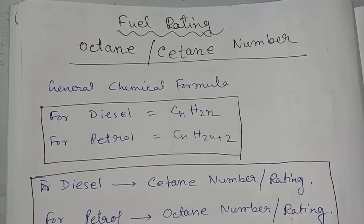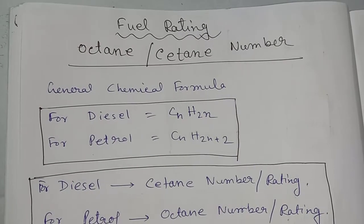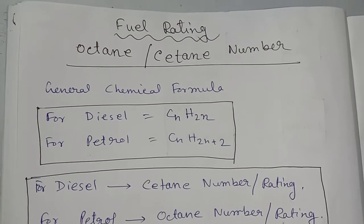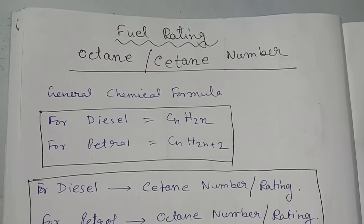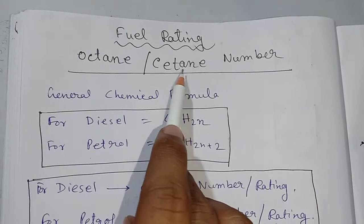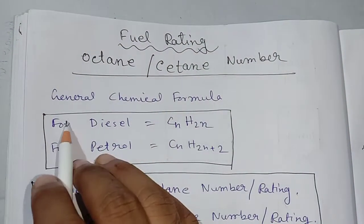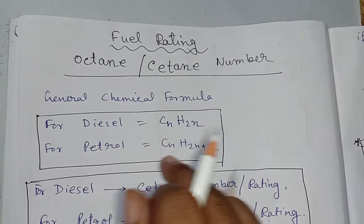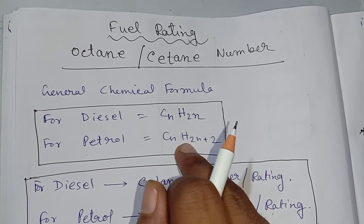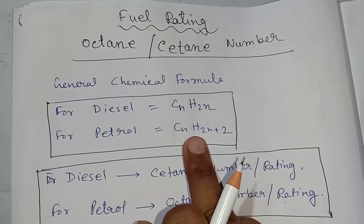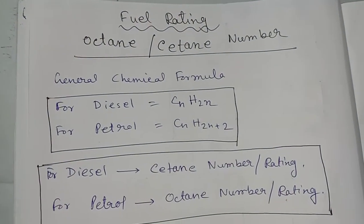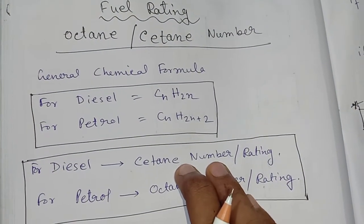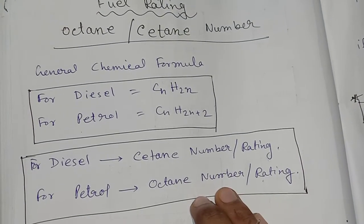Today's topic is fuel rating. Fuel rating depends upon two terms: one is octane number and the other is cetane number. Octane number is also called octane rating and cetane number is called cetane rating. The general chemical formula of diesel is CNH2N and petrol is CNH2N+2. Cetane rating is calculated for diesel and octane rating is calculated for petrol.